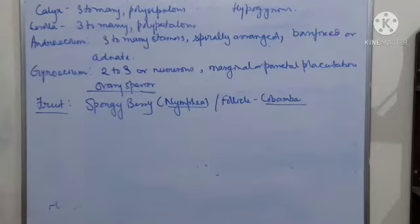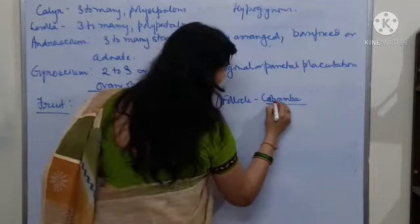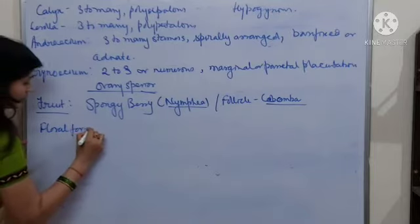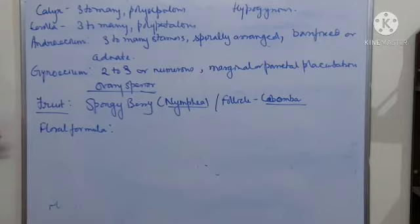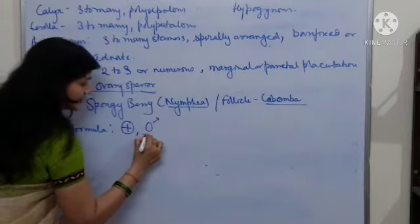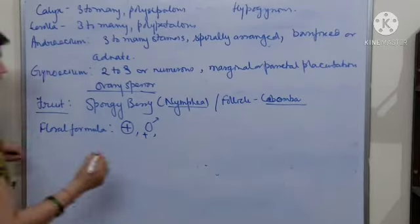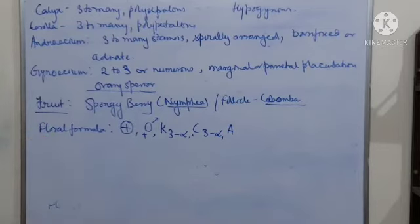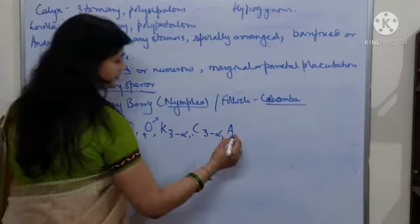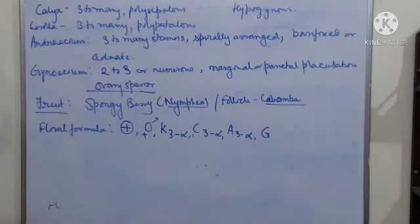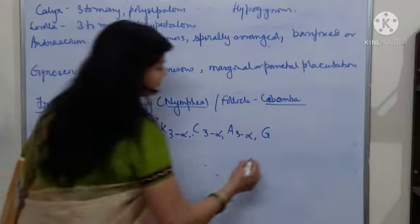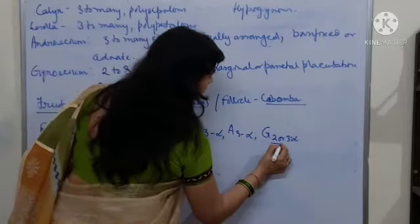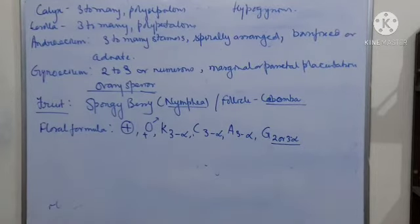The fruit types are spongy berry, found in Nymphaea, and follicle, found in Cabomba. Now, the floral formula of the family is: actinomorphic, bisexual; Calyx 3 to many, Corolla 3 to many, Androecium 3 to many stamens, Gynoecium 2 to 3 or numerous carpels, and the ovary is superior.